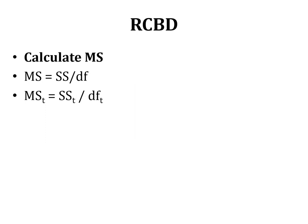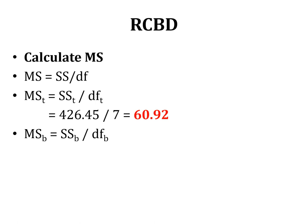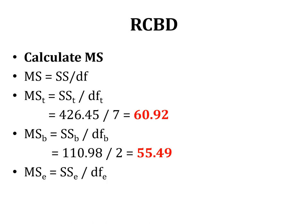Now we calculate the mean sum of squares (variance) using the formula: SS divided by df. MS treatment = SS treatment / df treatment = 426.45 / 7 = 60.92. MS blocks = SS blocks / df blocks = 110.98 / 2 = 55.49. MS error = SS error / df error = 140.98 / 14 = 10.07. These are the variances — the mean sum of squares — for each source of variation.